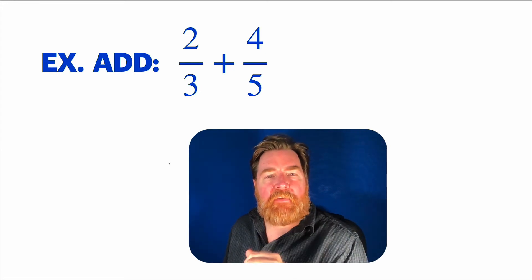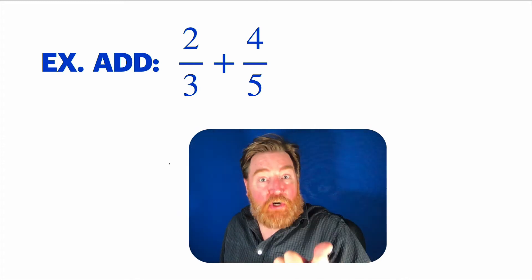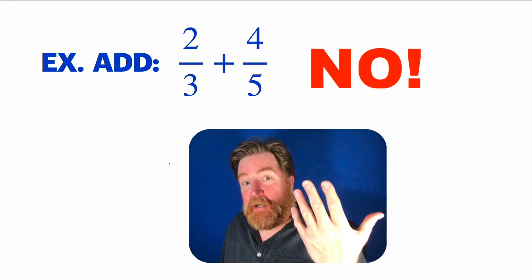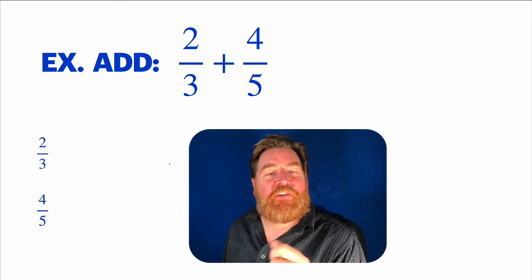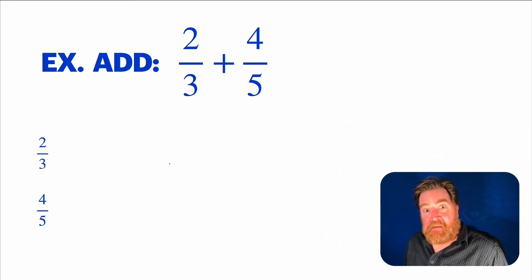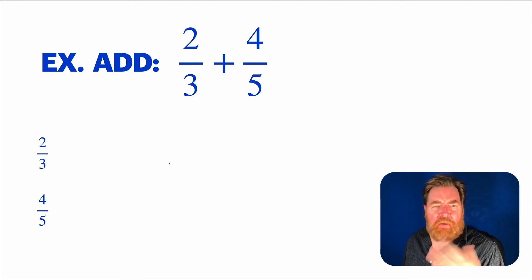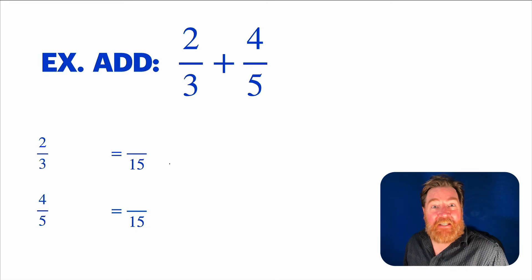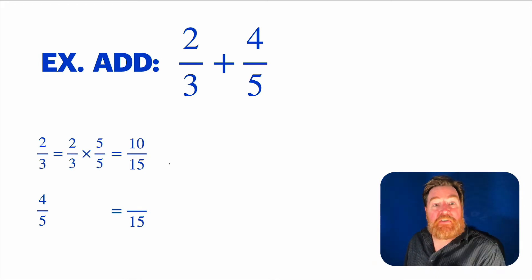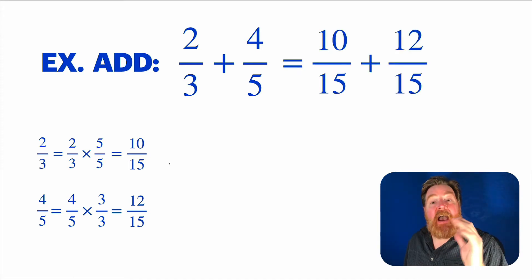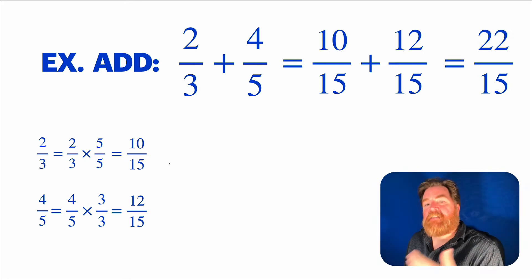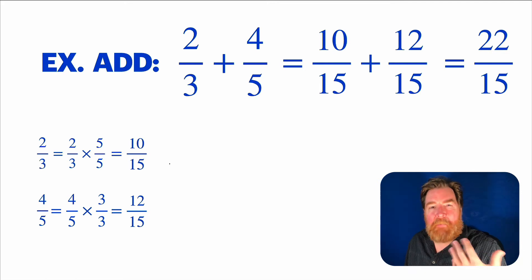How about adding two thirds and four fifths? Ask yourself: can we add them? Are the things the same? Thirds and fifths — are they the same things? No. So we can't add them. But maybe we can convert two thirds and four fifths — the thirds and the fifths — into the same things. Get a common denominator. Thirds and fifths? Multiply them together: fifteenths. Two thirds is really ten fifteenths, and four fifths is really twelve fifteenths. Can we add fifteenths and fifteenths? You betcha. We get fifteenths. How many? Twenty-two. It's all about that main principle of addition.